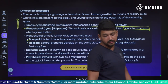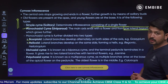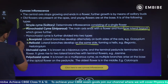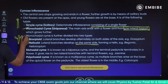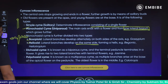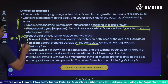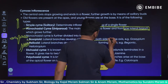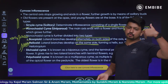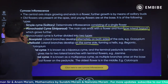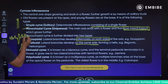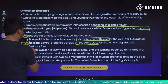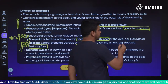Monochasial is divided into two types: scorpioid and helicoid. In scorpioid, lateral branches develop alternately on both sides of the axis — one time left, next time right, alternating. In helicoid, each lateral branch develops on the same side — all branches grow in one direction. Examples for scorpioid include Bignonia and Heliotropium.